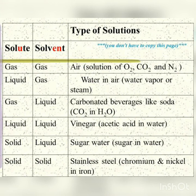The next category is solid in solid, and the examples are alloys. Alloys are homogeneous mixtures of metals in which different metals mix together in different ratios. For example, brass, in which copper and zinc mix together. Another example is stainless steel, in which chromium and nickel are present in iron.